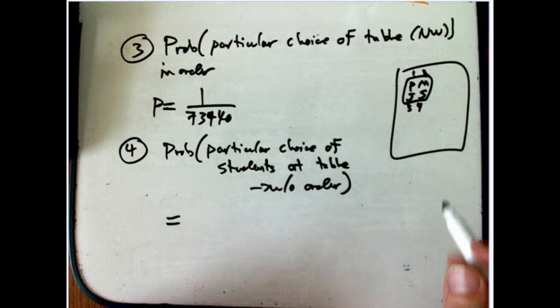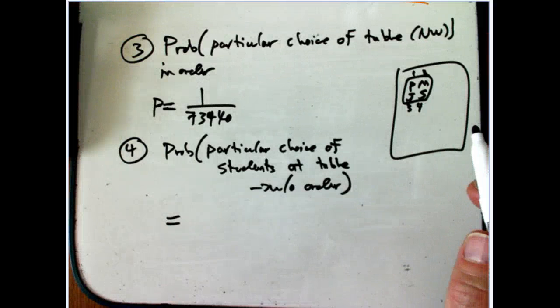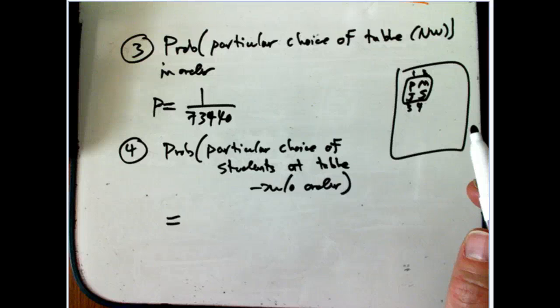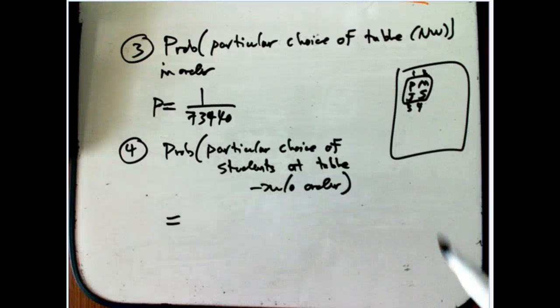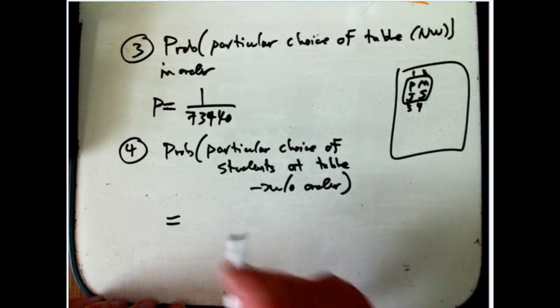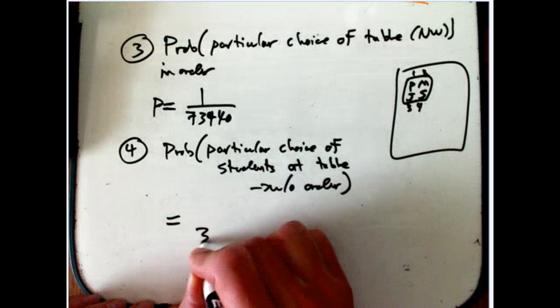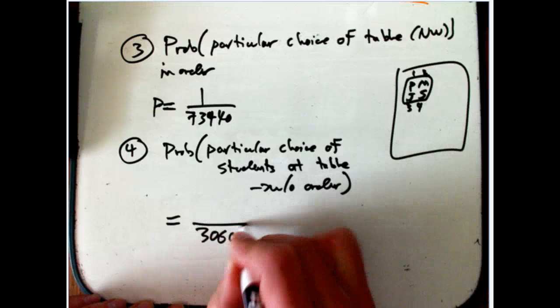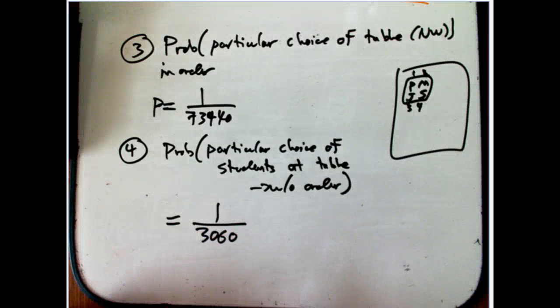I want to highlight two calculations real quick. One is that we counted all of those possibilities. We said if I don't pay attention to the order, then there's going to be 3,060 possibilities, and it's one of those possibilities.